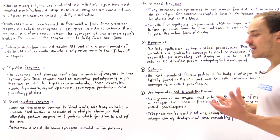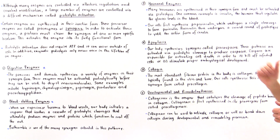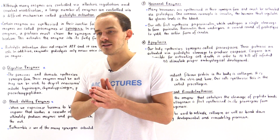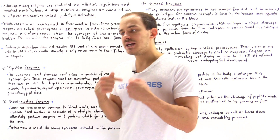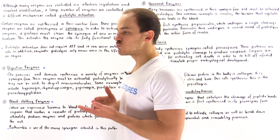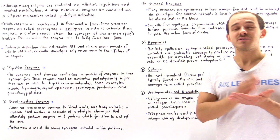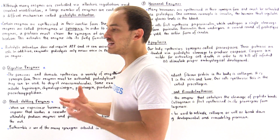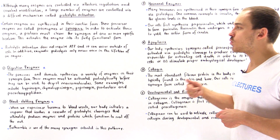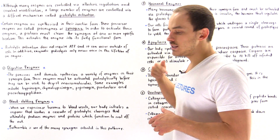Number four is apoptosis — programmed cell death. This is when a set of special enzymes initiates the process of cell death. One reason we want to kill off cells is if a cell is infected by a pathogen; we don't want that infected cell to infect other healthy cells, so we kill it off through apoptosis.